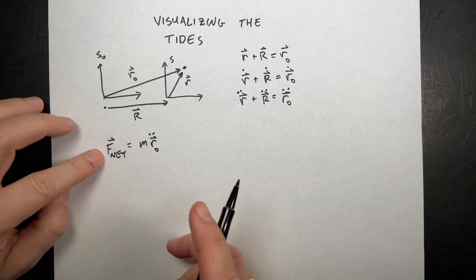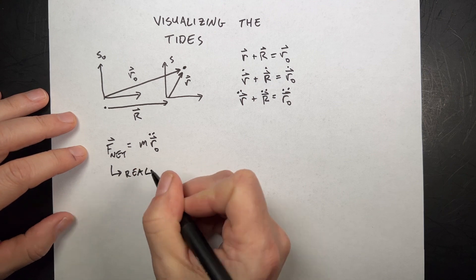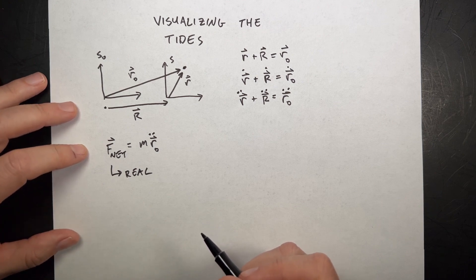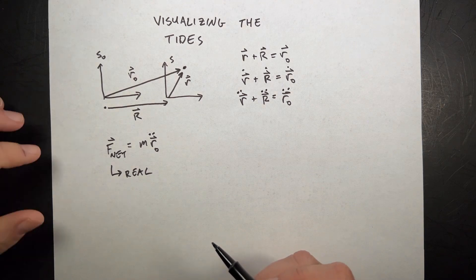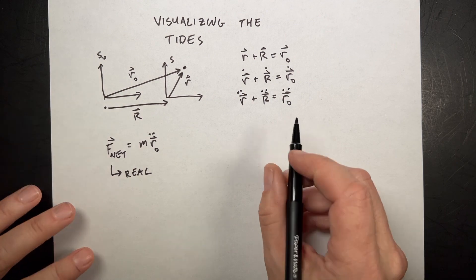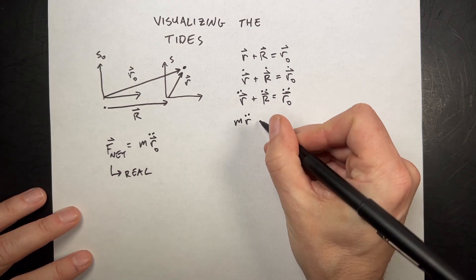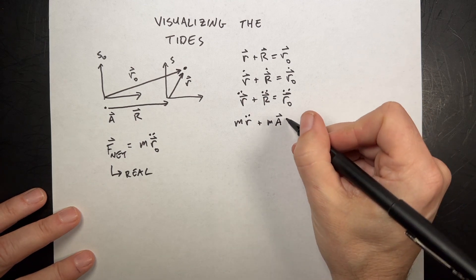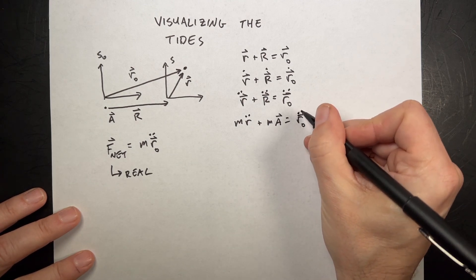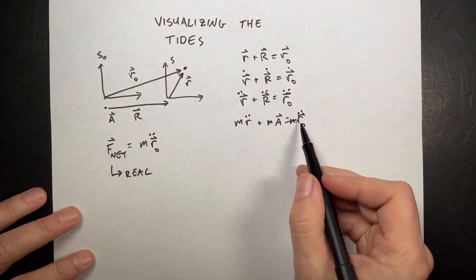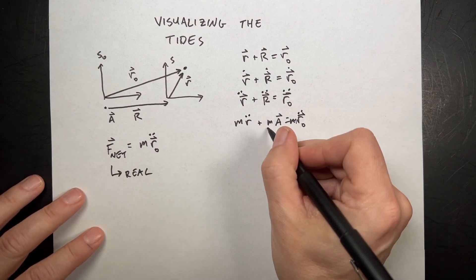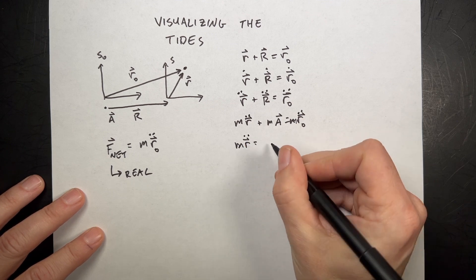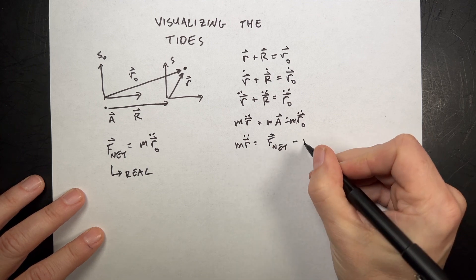These forces are real forces — gravitational interaction between a person and the earth, magnetic interaction between two magnets, real interactions between two things. If I multiply both sides of the equation by M, I get M·R-double-dot plus M·A equals R0-double-dot times M, which is just the net force. Subtracting, I get M·R-double-dot equals F-net minus M·A.